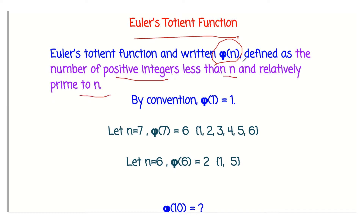One condition is that φ(n) must be less than n, and the integers must be relatively prime to n. By convention, φ(1) is equal to 1.